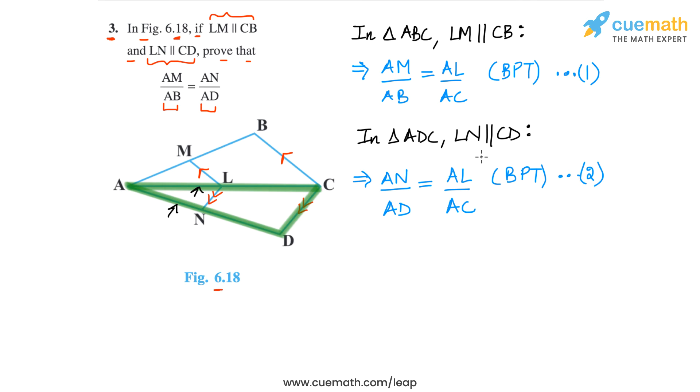So now, if we compare these two equations that we have obtained, equation 1 and 2, we see that the RHS is the same in both, AL by AC and AL by AC. And therefore, from 1 and 2, from 1 and 2, we can say that the LHS, the two left-hand sides will also be equal.